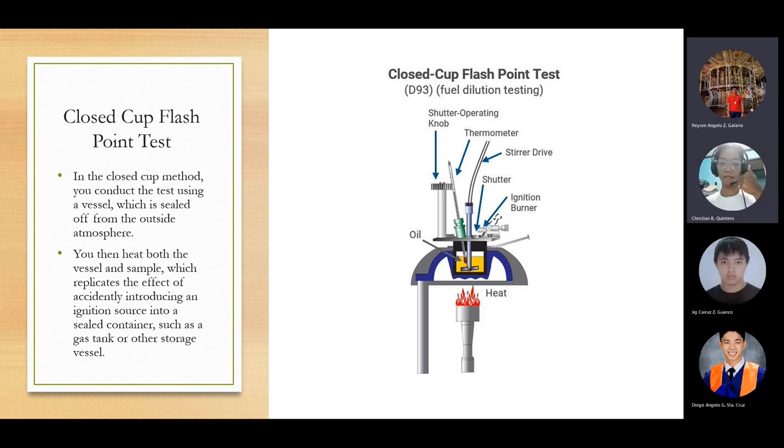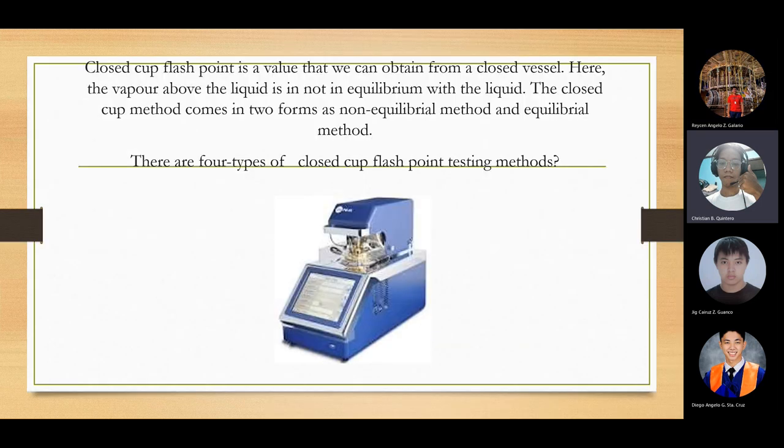Let's move to closed cup flashpoint test. In the closed cup method, you conduct the test using a vessel which is sealed from the outside atmosphere. You then heat both the bezel and the sample, which replicates the effect of accidentally introducing an ignition source into a sealed container, such as a gas tank or other storage vessel. The closed cup apparatus is to determine fire and flashpoint temperature with different kinds of fuels. This type is Abel flashpoint.